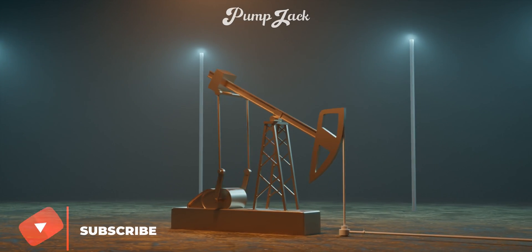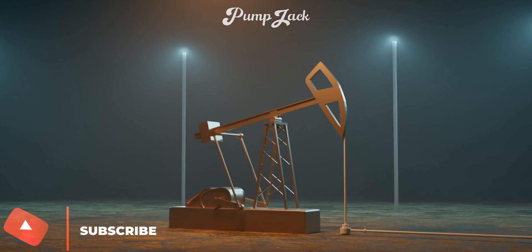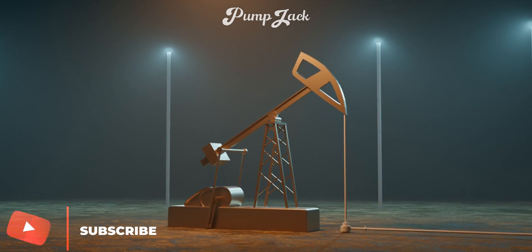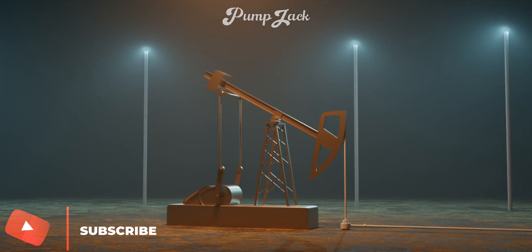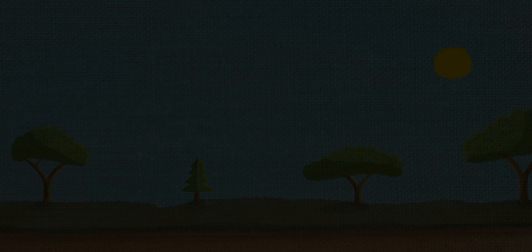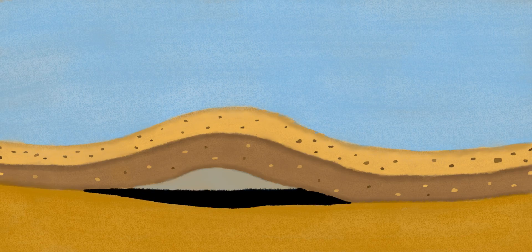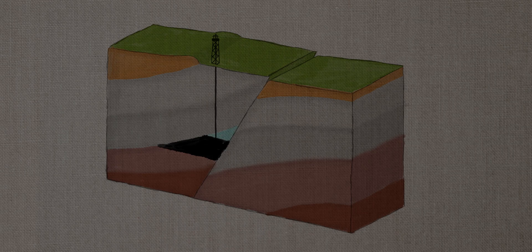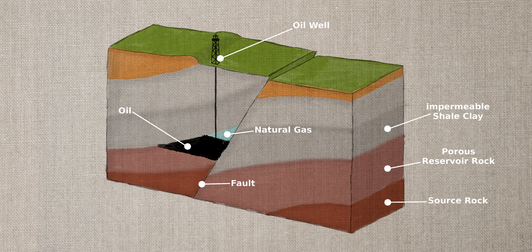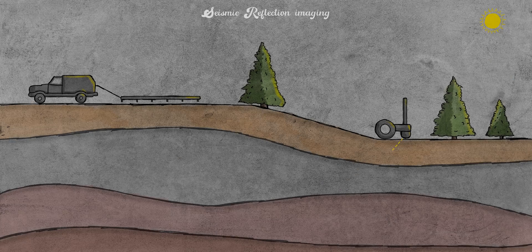The first step in the manufacture of kerosene is to collect the crude oil. Finding crude oil reservoirs is a long and complex process that can take years of research. These reservoirs can be at depths of more than 3,000 meters, or hidden under thick layers of salt deep below the seabed, or trapped in geological folds where the rock is folded into complex structures.